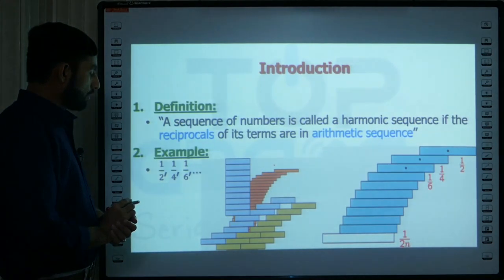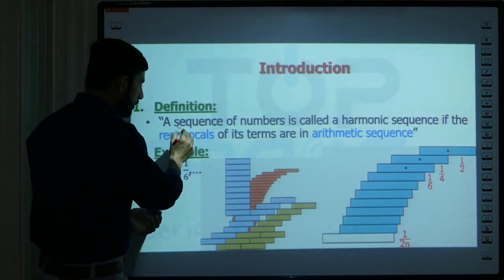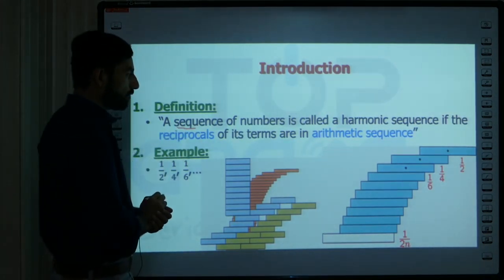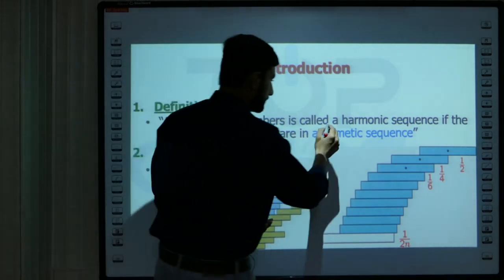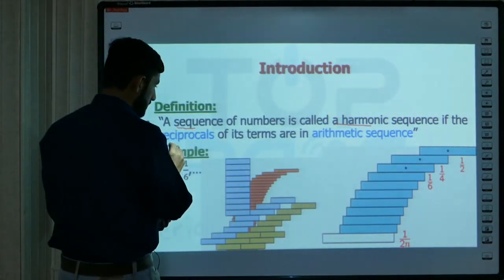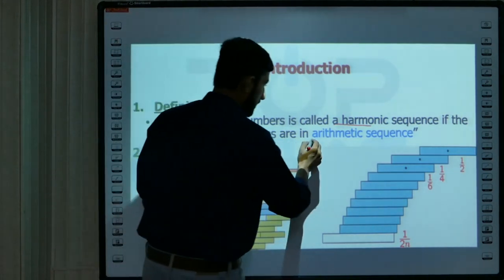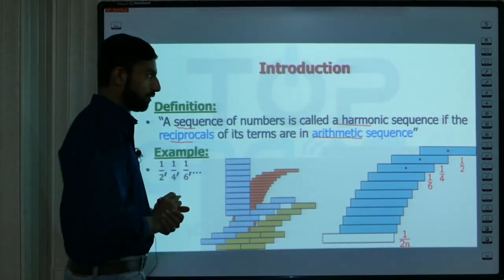So what is the definition of harmonic progression? Harmonic progression basically is a sequence of numbers in such a way that the reciprocals of its terms are in arithmetic sequence.